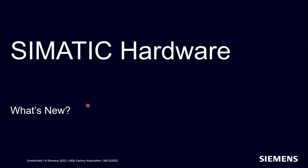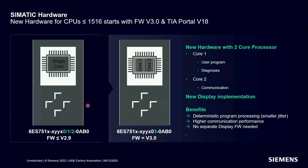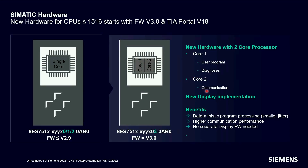We wanted to quickly run through some new introductions to the Simatic hardware portfolio. It's around 10 years since the S7-1500 was launched, and it's about to go through an innovation cycle. Firmware will be updated to version 3, and there will be a hardware release for CPUs between the 1511 and 1516, switching to a dual-core ARM-manufactured CPU. Core one processes the user program and diagnostic events, and core two handles communication tasks.